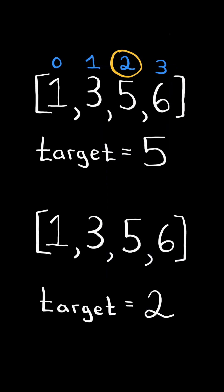Consider this new example. If target does not exist in the list, return the index of where it would be if it were inserted in order. In this case, target would be inserted at index 1 in the list. We will solve this in O of log n time using binary search.